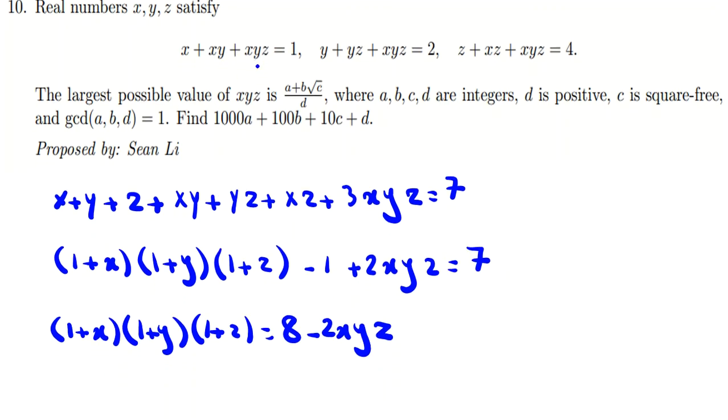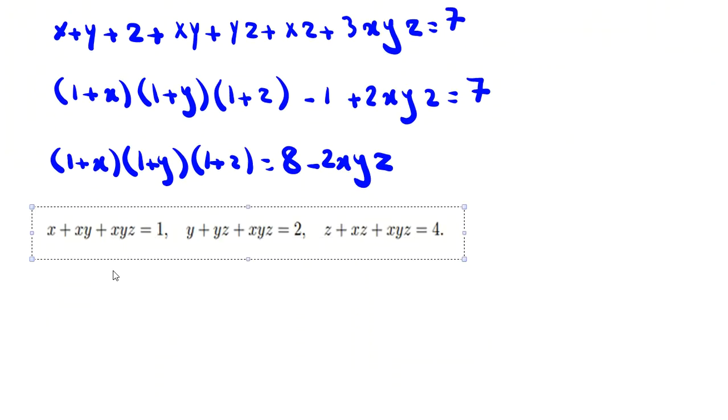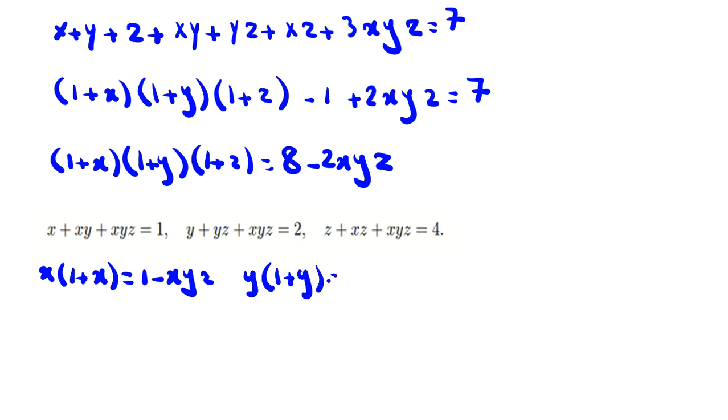Because we have (1 + x), if you factor from x, x(1 + x) = 1 - xyz. This one y(1 + y) = 2 - xyz, and this one z(1 + z) = 4 - xyz.